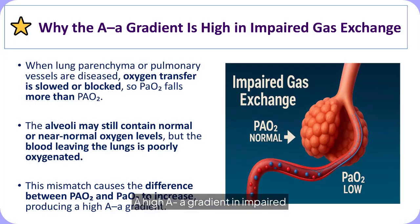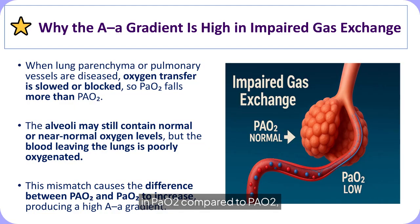When the lung parenchyma or pulmonary vasculature is diseased, the diffusion of oxygen across the alveolar-capillary membrane becomes impaired, causing arterial oxygen tension to fall disproportionately compared with alveolar oxygen tension. The alveoli may retain normal or near-normal oxygen concentrations, yet the blood exiting the pulmonary capillaries remains inadequately oxygenated due to impaired gas transfer or ventilation-perfusion inequality. This mismatch increases the gradient between alveolar and arterial oxygen, resulting in an elevated alveolar-arterial oxygen gradient — there is a greater drop in arterial oxygen compared to alveolar oxygen.